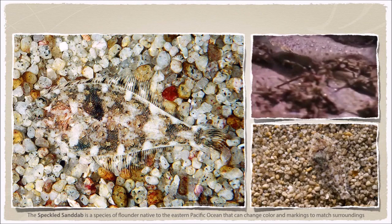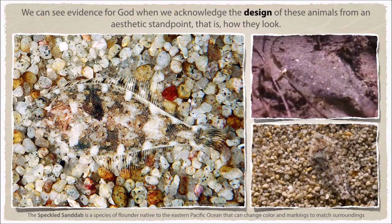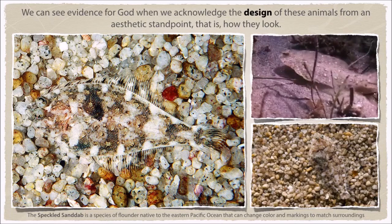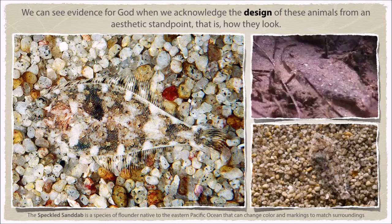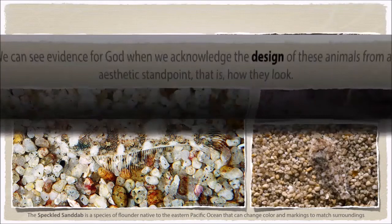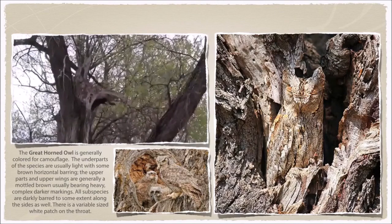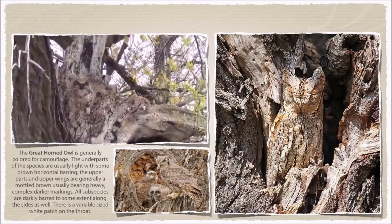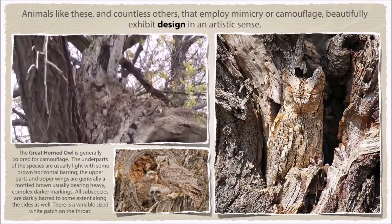We see countless examples of animals like the speckled sand dab that are evidence for God when we acknowledge the design in these animals from an artistic or aesthetic standpoint — that is, how they look. Not even from an engineering standpoint, but just looking at how these animals integrate and blend into their surroundings becomes a beautiful example of design. For example, the great horned owl and how its patterning allows it to become so stealthfully hidden amongst the trees.